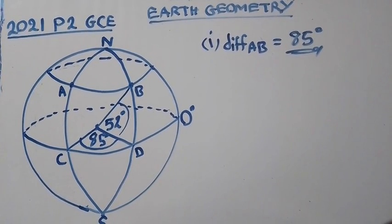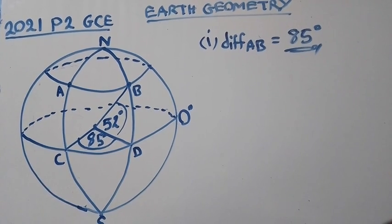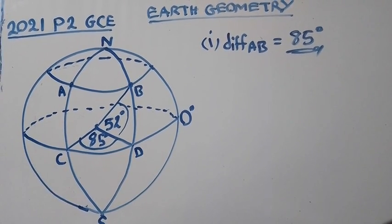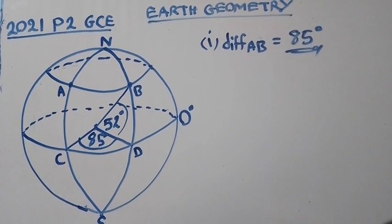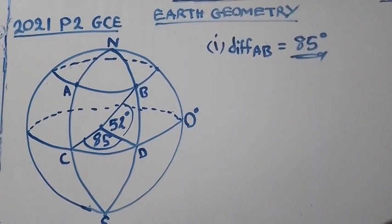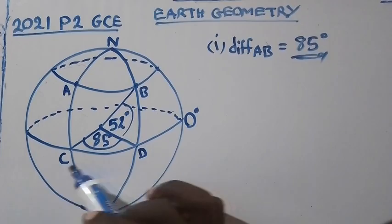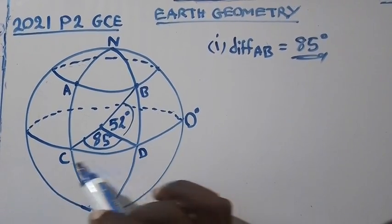We go to question 2: Calculate the distance between points C and D around the equator in nautical miles. CD, they want us to calculate the distance between C and D.